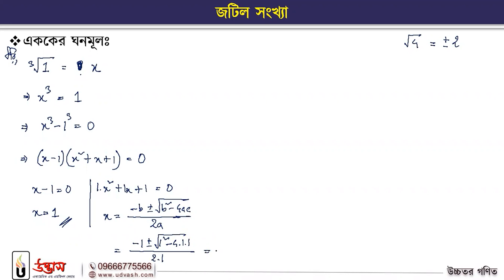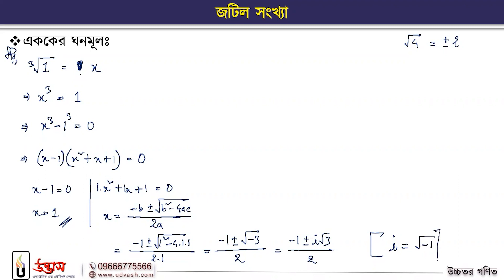So it is equal to minus 1 plus or minus root over minus 3, divided by 2. Which gives minus 1 plus or minus root over 3, divided by 2. These are the two values. The cubic root of 1 has the value of 1 — it doesn't have to be plus or minus.